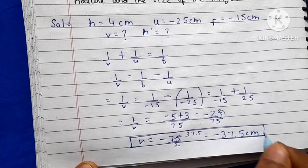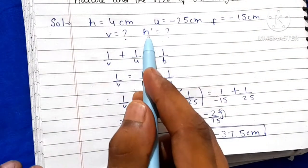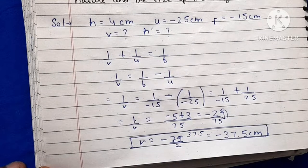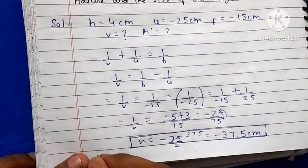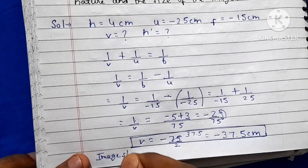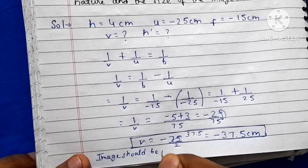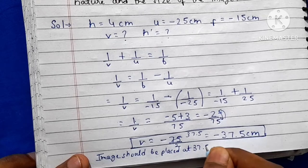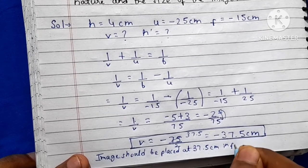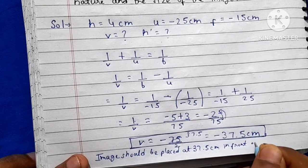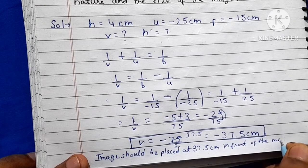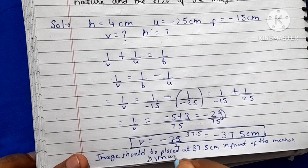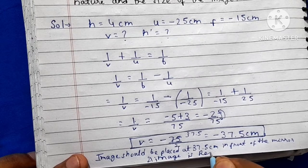Now we will find out our image size. The image should be placed at 37.5 cm in front of the mirror, and the image is real.